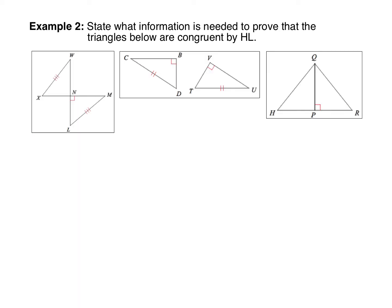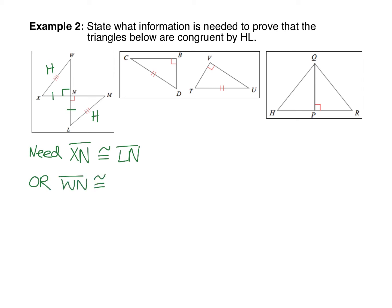In Example 2, let's state what information is needed to prove triangles congruent by HL. Be aware there may be more than one possible answer. In the first pair, we have a 90-degree angle and its vertical angle — both right angles — and the hypotenuses are marked with three tick marks. We just need a pair of legs. Since each triangle has two legs, there are two possible answers: XN congruent to LN (shorter legs), or WN congruent to MN (longer legs). Either gives us a hypotenuse and a leg.